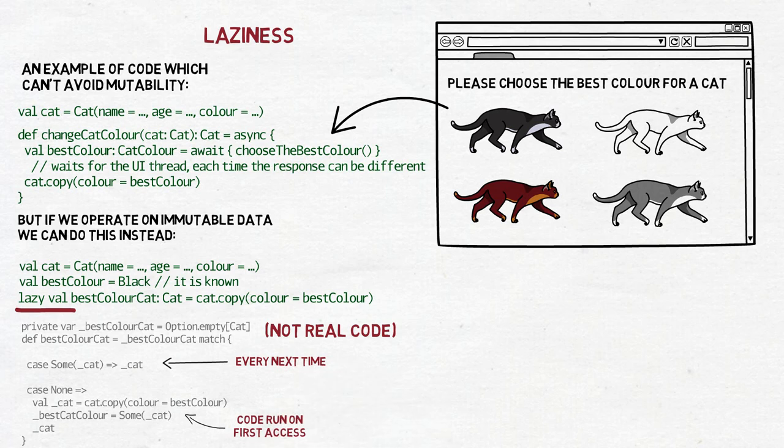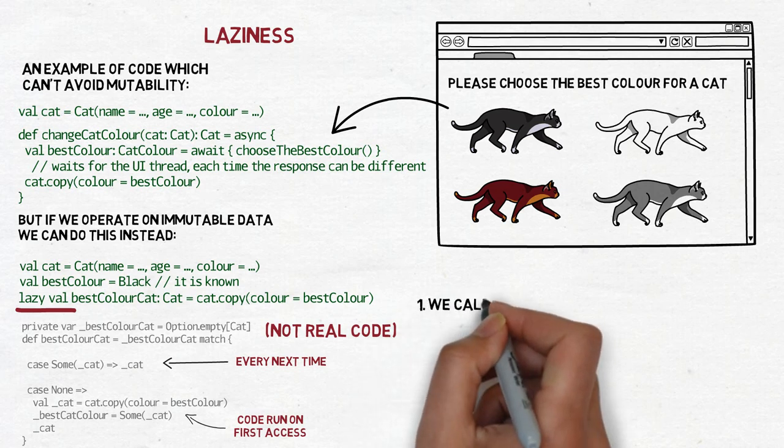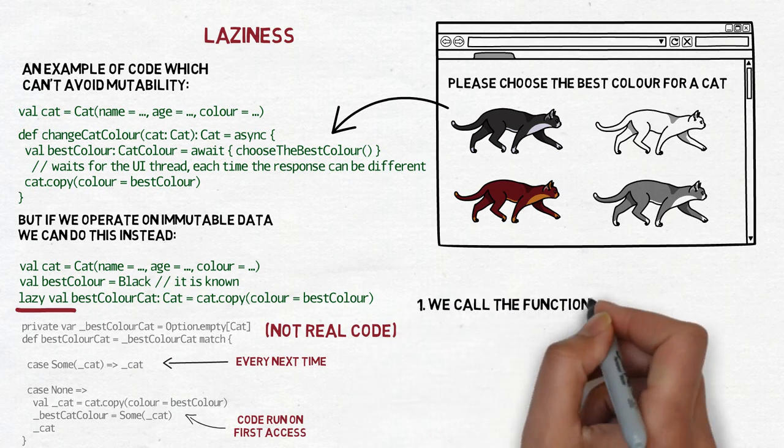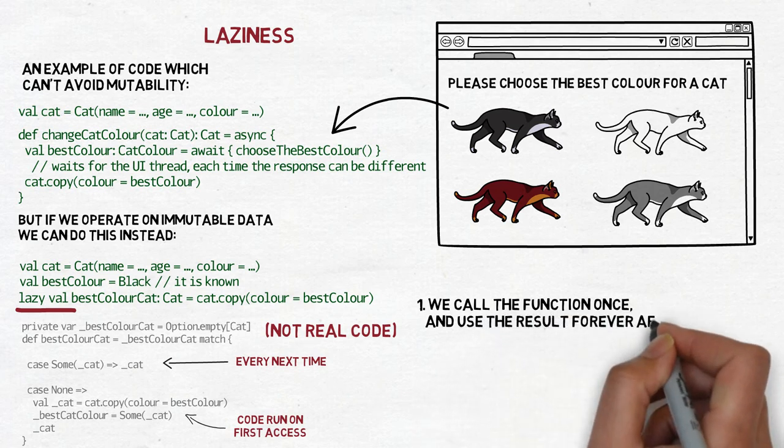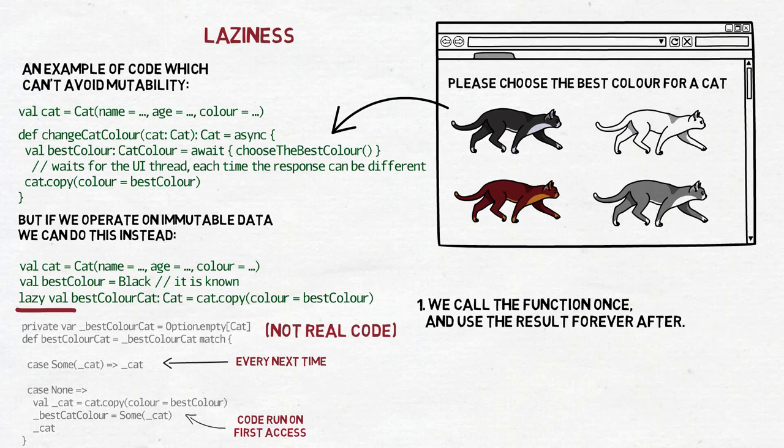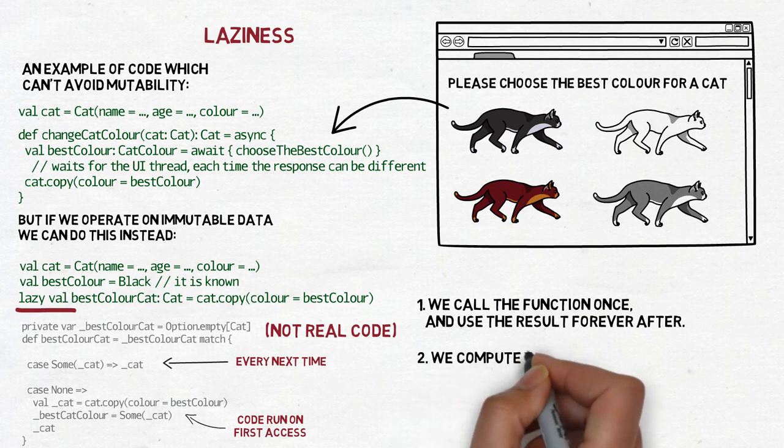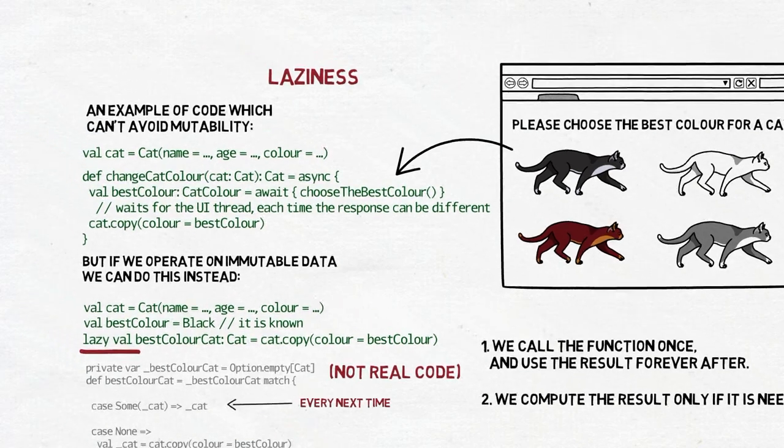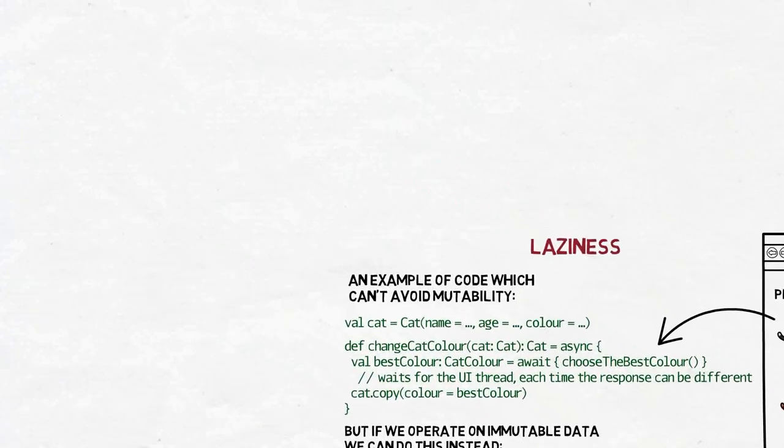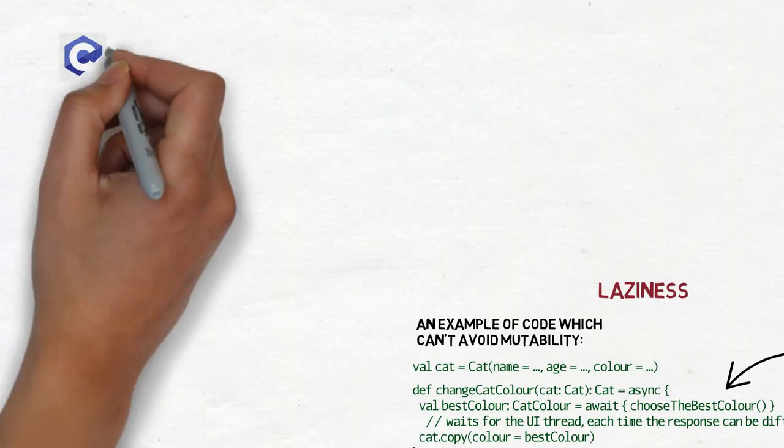Let's consider the implications. One is of course that we save the computers from work. Instead of calling the function over and over, we now can call it once and just use the computed result forever after. That's already good for performance, but that's not all. Laziness means that we can compute the result only if it is needed. If we don't need it, we may never have to compute it. No more computations which result in data structures that are subsequently ignored because the program's logic chooses another path. The fastest code, after all, is that which is never called.